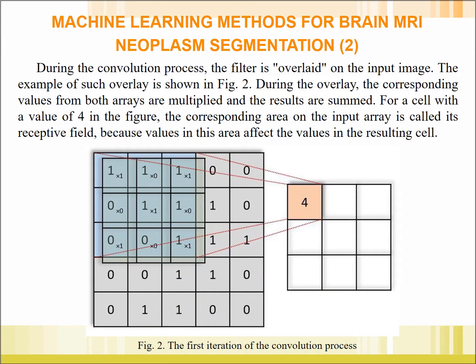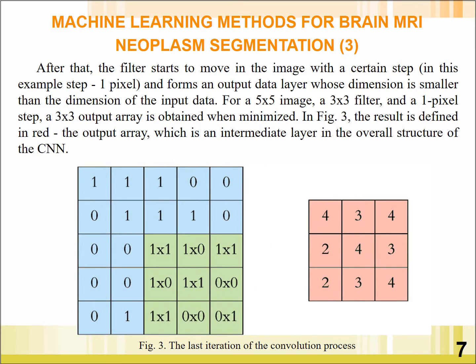During the convolutional process, the filter is overlaid on the input image, as shown in Figure 2. After that, the filter starts to move across the image with a certain step and forms an output data layer.